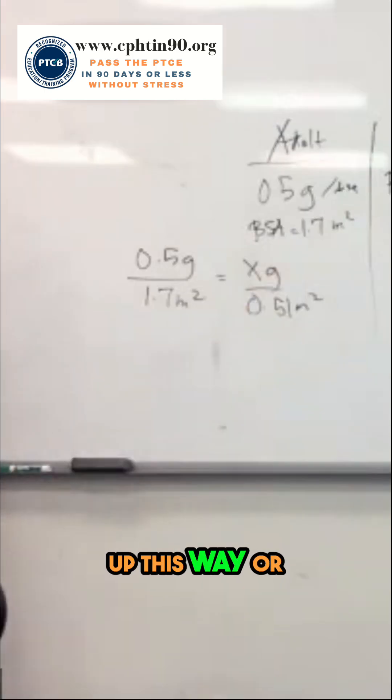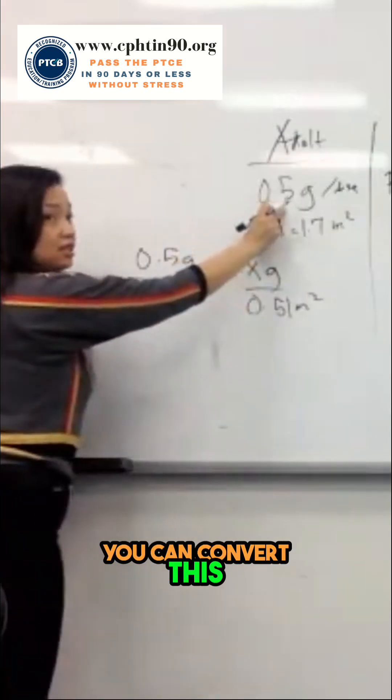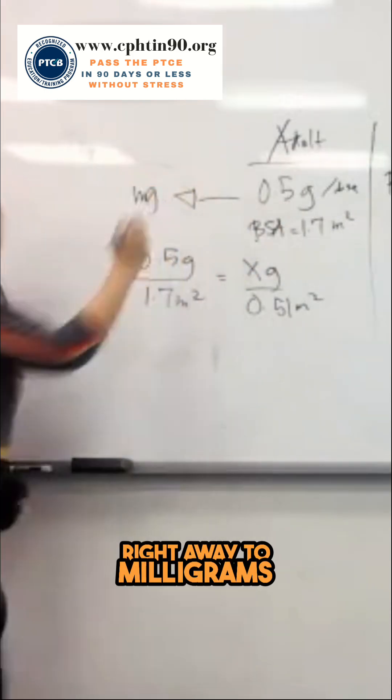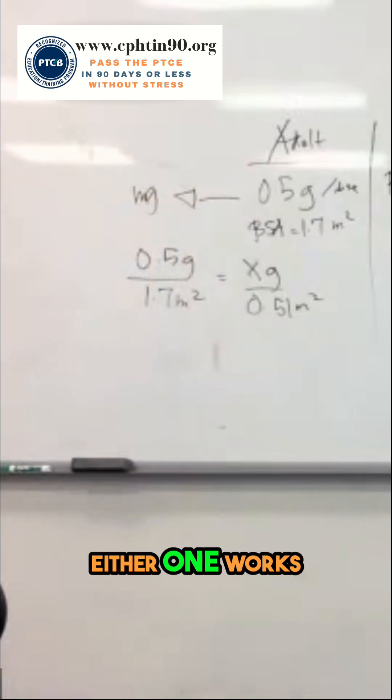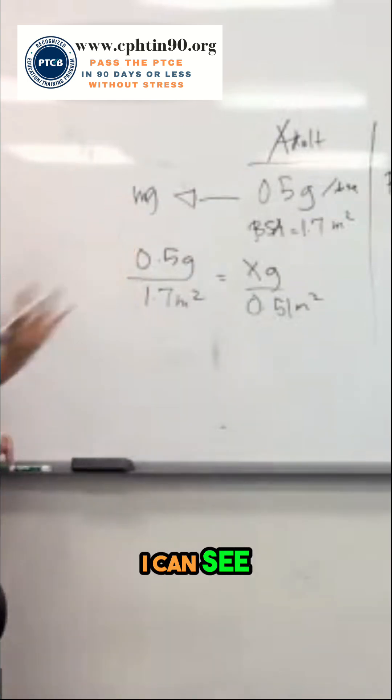You can set it up this way, or you can convert this right away to milligrams. If you see that, it's X per milligram is final answer. Either one works, okay? I set my outpaces so that I can see, okay?